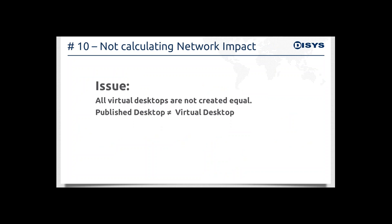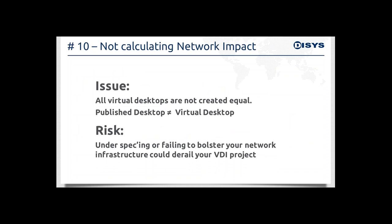Number 10: not calculating network impact. So many organizations still rely on old bandwidth assumptions. A single Citrix or terminal server session could use between 20 and 50 kbps per session. Virtual desktops, however, provide a richer experience that may include Flash, video, social media, and other peripherals. VDI users experience less idle time than published app or published desktop users. Therefore, it's important to take into account the additional load on the network, and estimating network impact should be a key consideration.